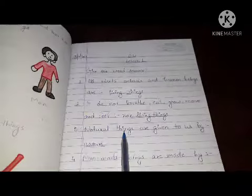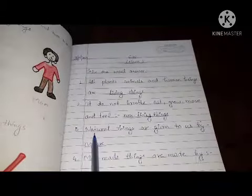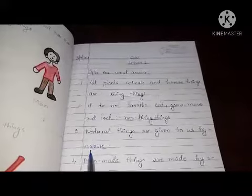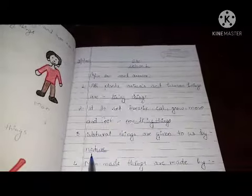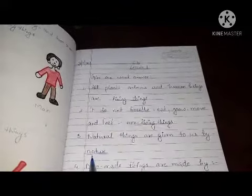Number three is: natural things are given to us by what? So natural things hain kaha se milta hain? By nature. Nature matlab God, right? So woh hume God ke through milta hain, in the nature.